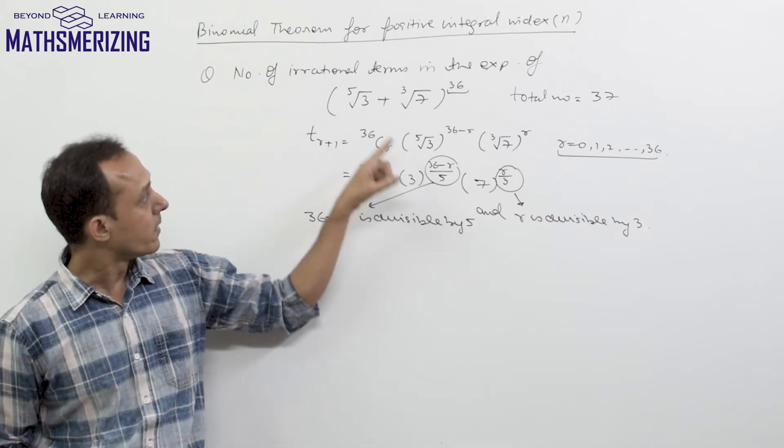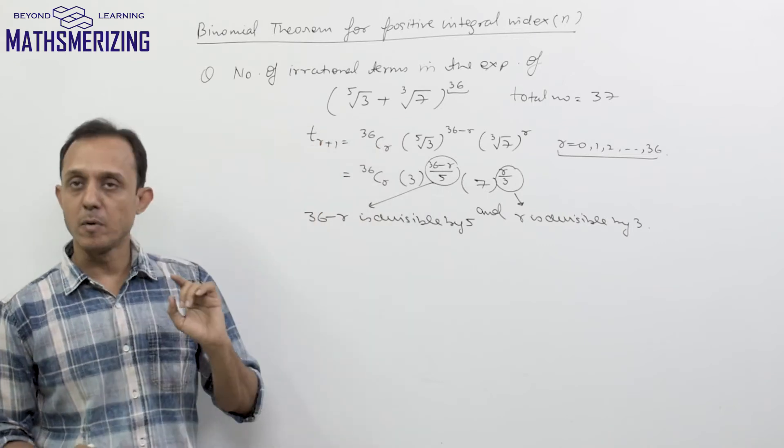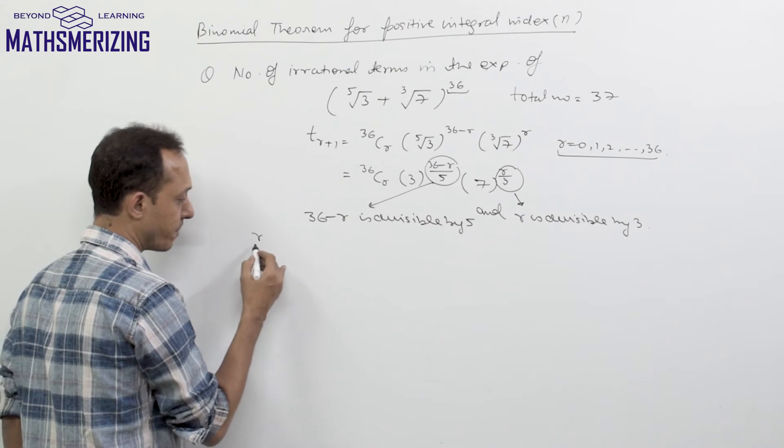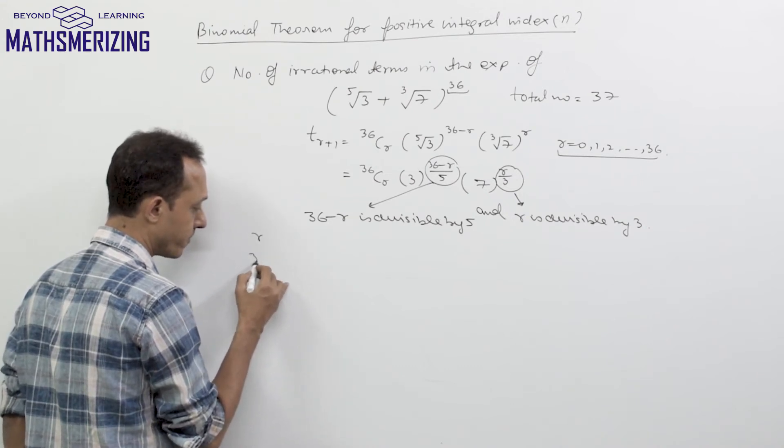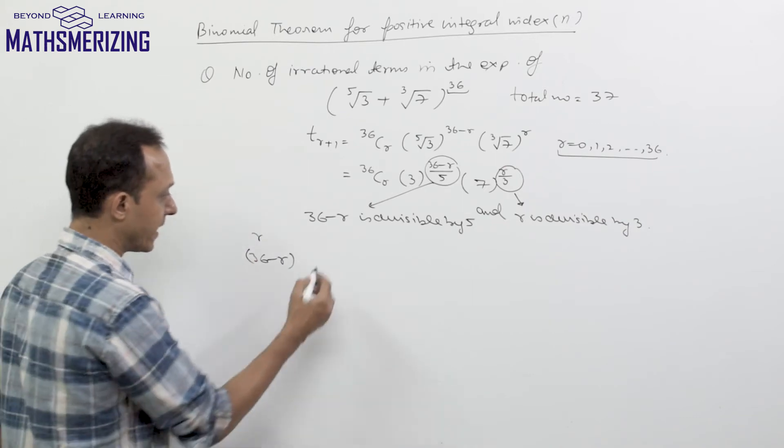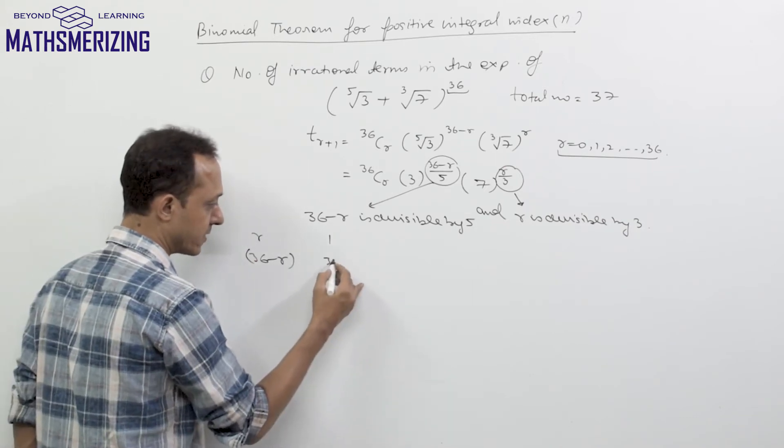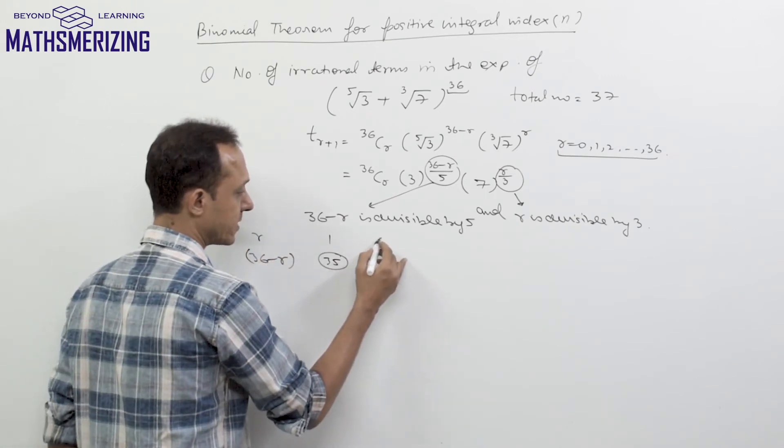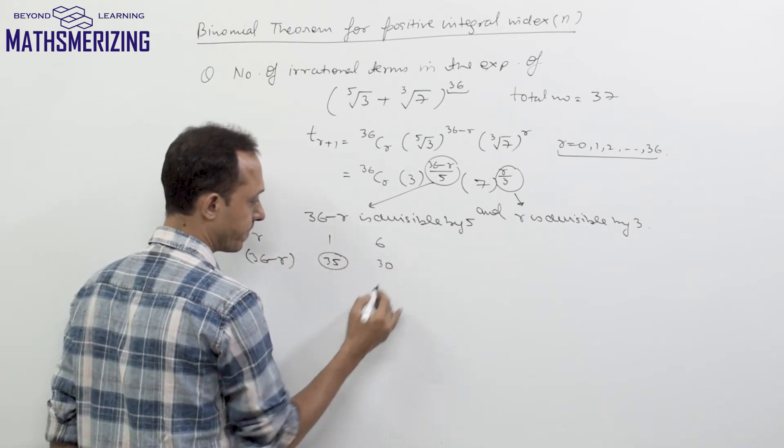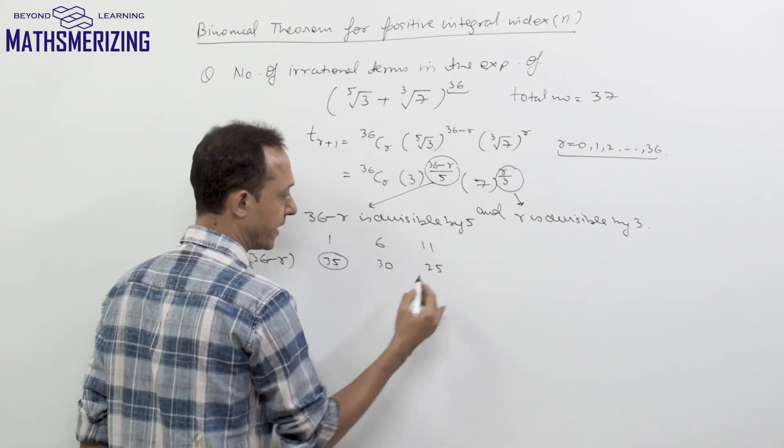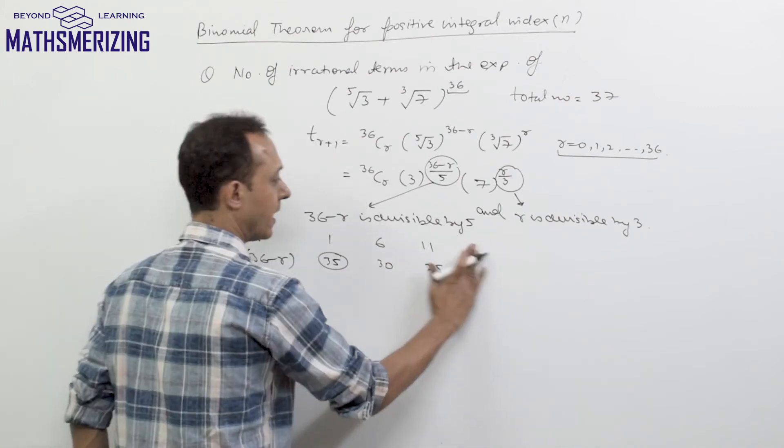So in all these cases I'll have an integral term or rational term. So what I'll do is I'll write the values of r and corresponding to that I'll write 36 minus r which is divisible by 5. So if I take r as 1, so I'll get this value as 35. If I put r as 6, I'll get 25. If I put r as 16, I'll get 20.